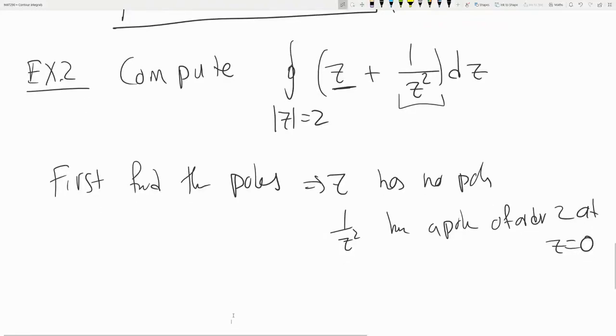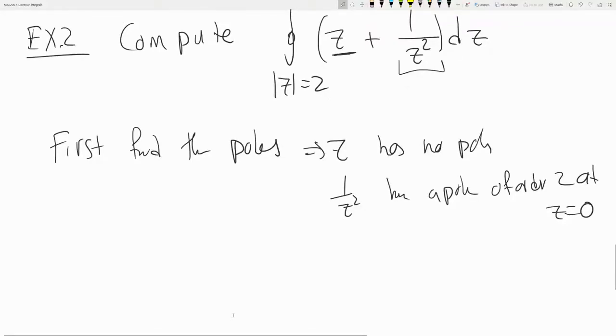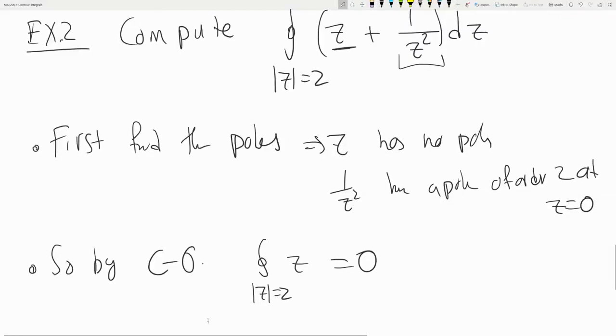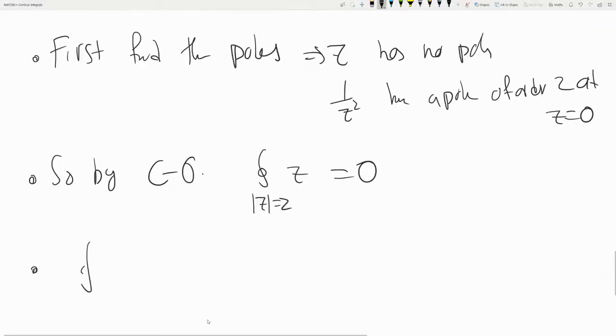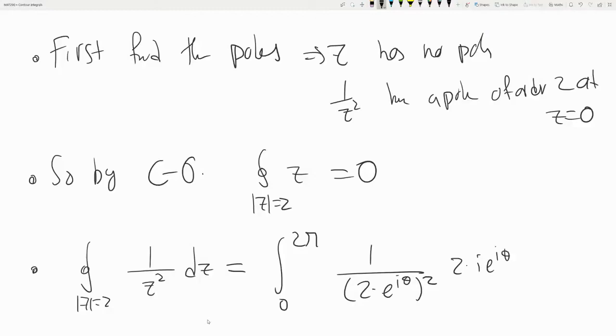We will talk about order later in this course, so don't worry about that yet. Good. So by Cauchy-Goursat, the first term is gone. Okay, so that's up. But for the second one we cannot use Cauchy-Goursat, so we have to do it by hand. So recall how Adrian defined the parameterization. We have 0 to 2π, and then we have the radius 2 times e^(iθ) squared, and then times 2i e^(iθ) dθ. So the 2 came from the radius.